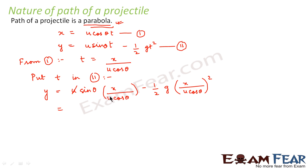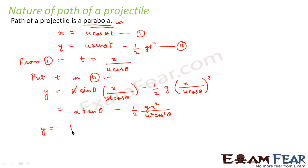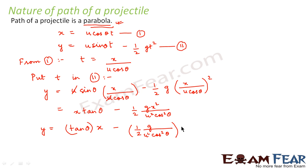The u's cancel, so the first term becomes x tanθ (since sinθ/cosθ = tanθ). Therefore we can write: y = tanθ · x − [g / (2u² cos²θ)] · x².